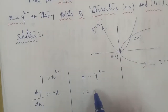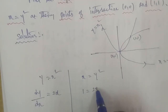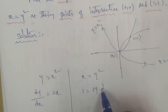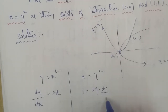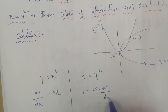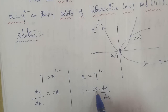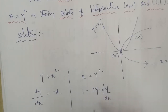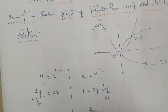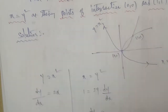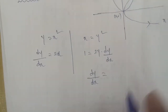Differentiating y square with respect to x gives 2y into dy by dx. Therefore dy by dx is equal to 1 by 2y.